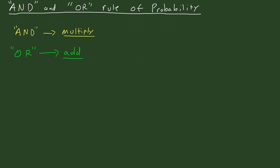Alright, so today we're going to talk about the AND and OR rule of probability. This basically states that whenever you hear the word AND, you multiply, and whenever you hear the word OR, you add.